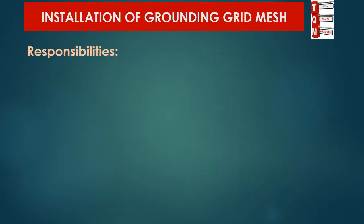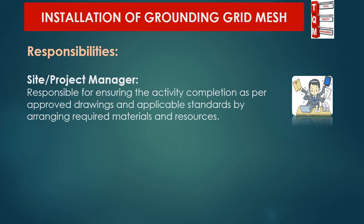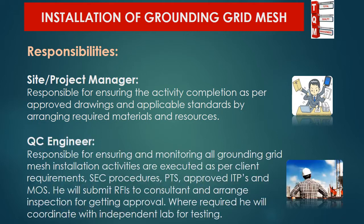The project team will have the following responsibilities to execute this activity. The site manager and project manager will be fully responsible for ensuring the activity completion as per approved drawings and applicable standards, by arranging required materials and resources. The quality control engineer will be responsible for ensuring and monitoring all grounding grid mesh installation activities are executed as per client requirements.